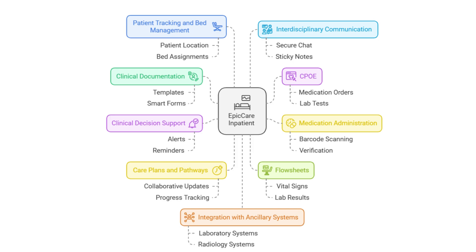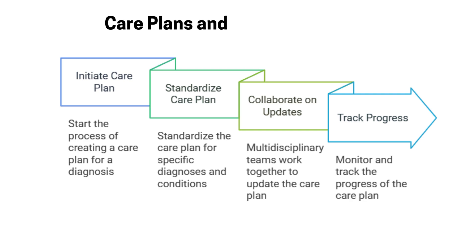Let's talk about care plans and pathways. These are crucial for coordinating care, especially when you have multiple specialists and nurses involved. Think of it as a shared roadmap that guides the entire team toward the same goals for the patient — instead of everyone operating in silos, you're creating a more unified approach to care. Care plans and pathways aren't meant to be inflexible — they're starting points that you can adapt to each patient's needs. It's about providing a framework, not a straitjacket.